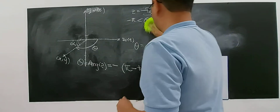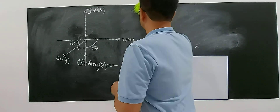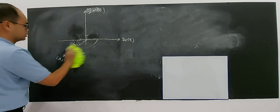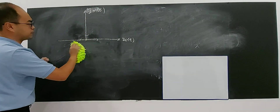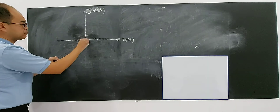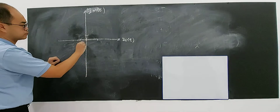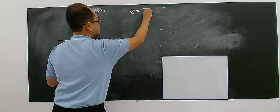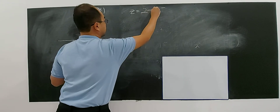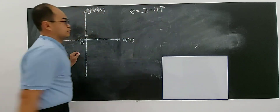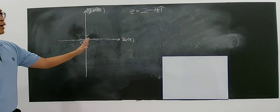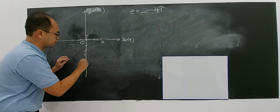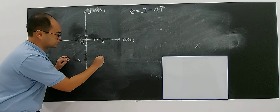Let's move on to the last part: the fourth quadrant. What happened if the complex number is in the form of 2 minus 4i? Where is 2? It's on the real axis. Negative 4 is here — it's in the fourth quadrant.